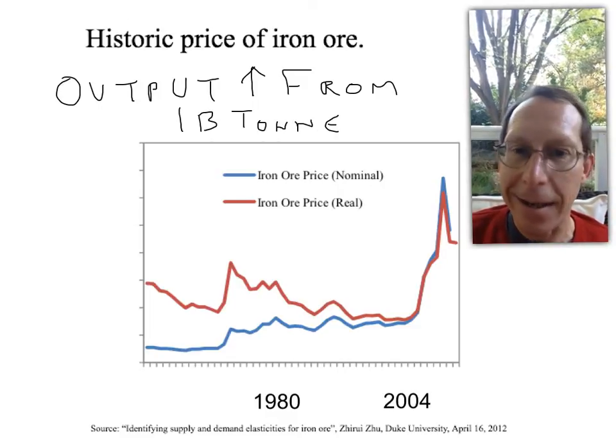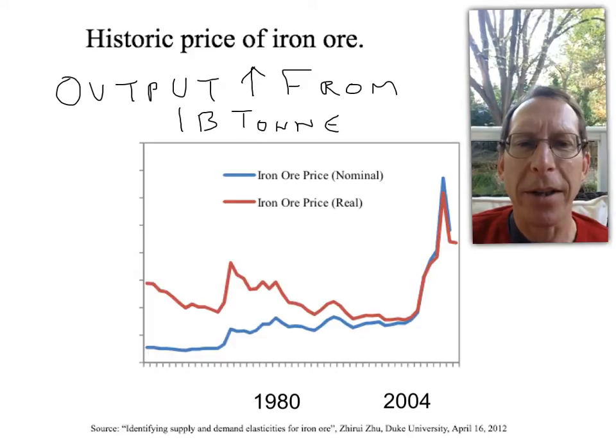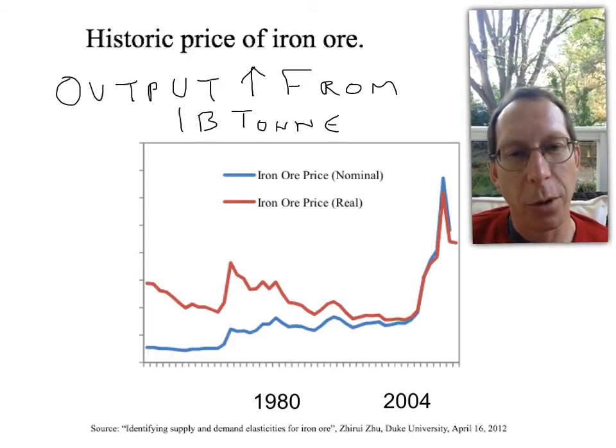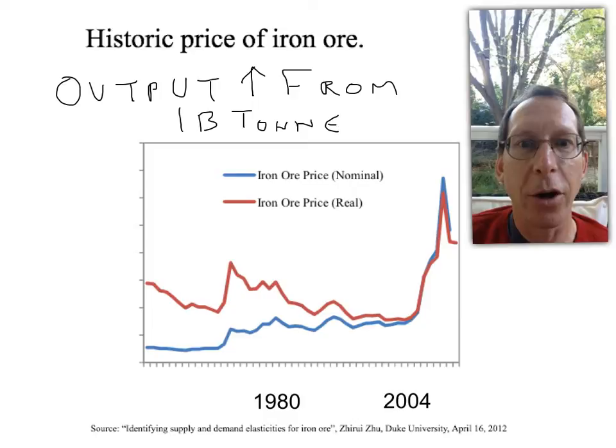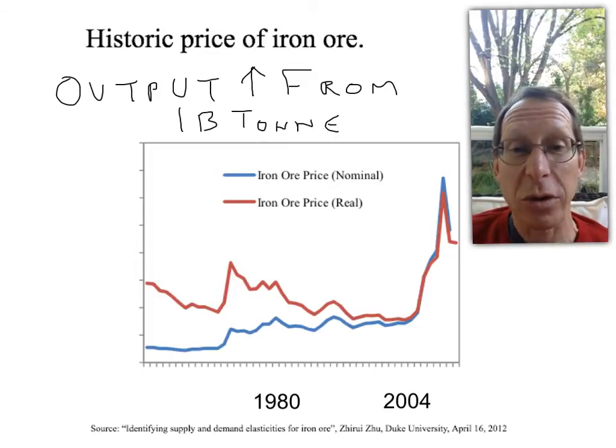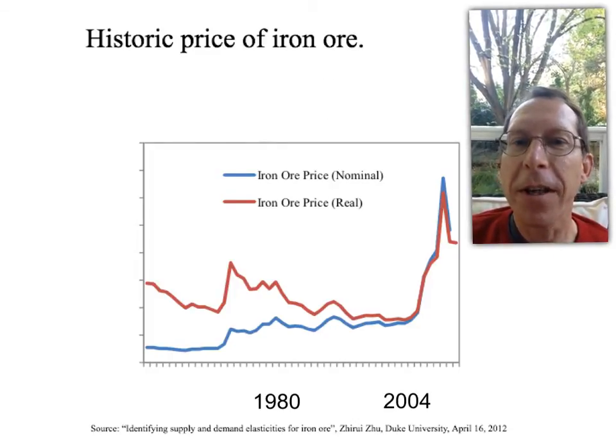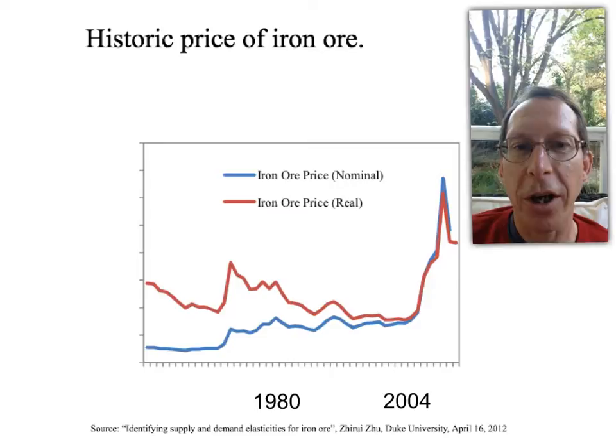Needless to say, iron ore producers are not very happy about this, particularly some of the smaller ones. There's talk of forming an iron ore cartel, the Australian equivalent of the oil cartel OPEC. It's illegal so it probably won't happen. But there's a lot of finger pointing going on.